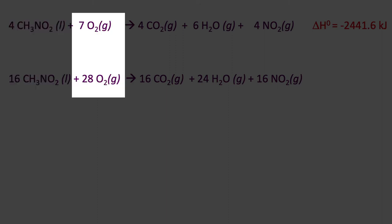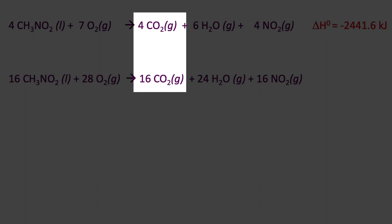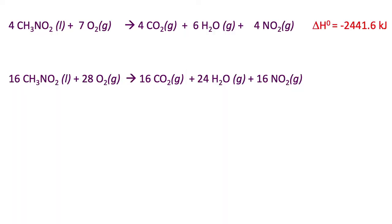So if you have four times all reactants and four times all products, you also have four times the standard enthalpy, and you can multiply that out to get negative 9,766.4 kilojoules.